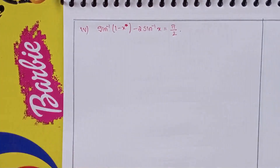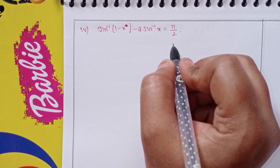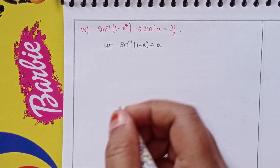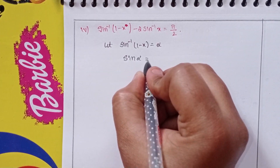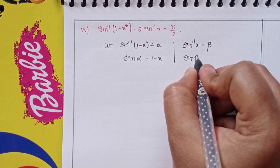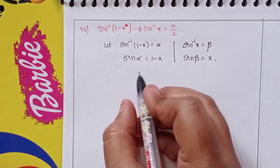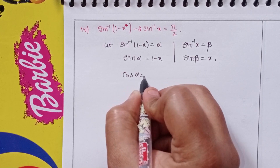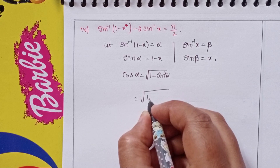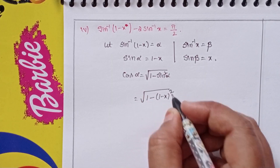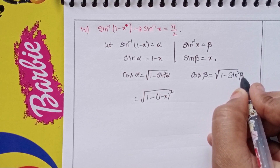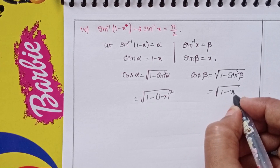Fourth problem: sin⁻¹(1−x) − 2·sin⁻¹(x) = π/2. Let sin⁻¹(1−x) = α, so sin α = 1−x. Let sin⁻¹(x) = β, so sin β = x. Then cos α = √(1 − sin²α) = √(1−(1−x)²) and cos β = √(1−sin²β) = √(1−x²).